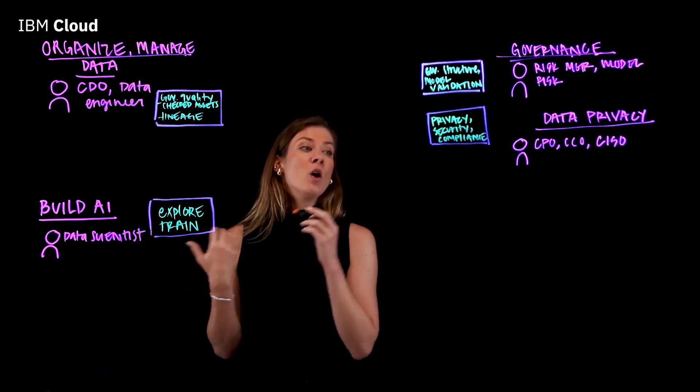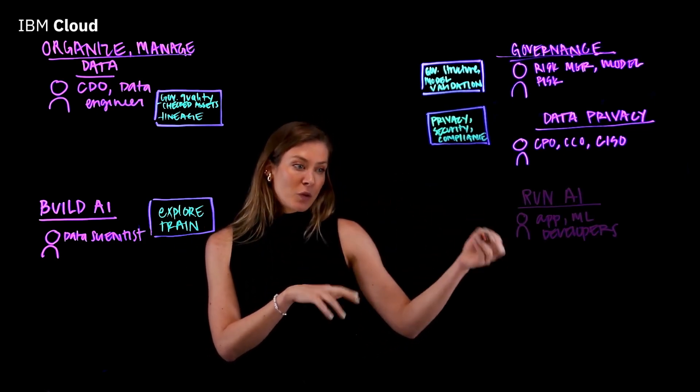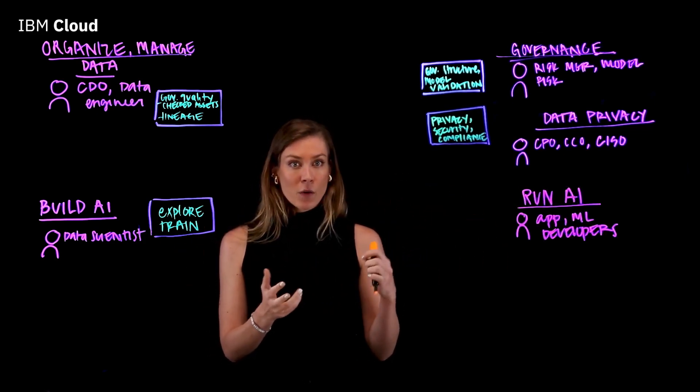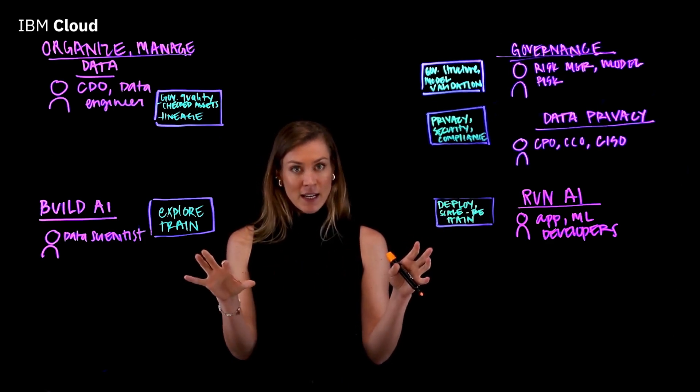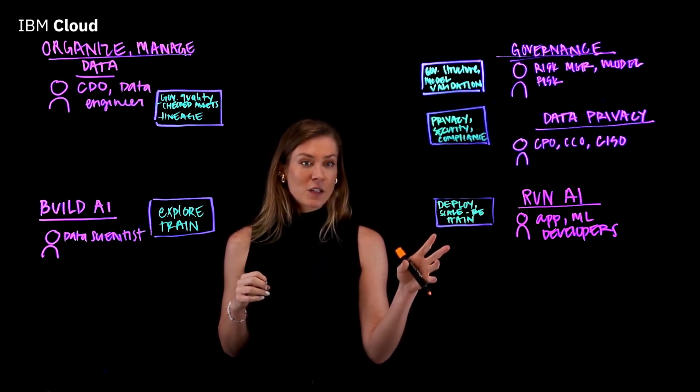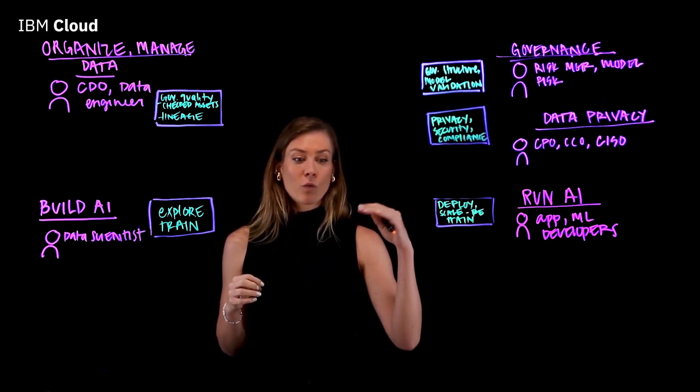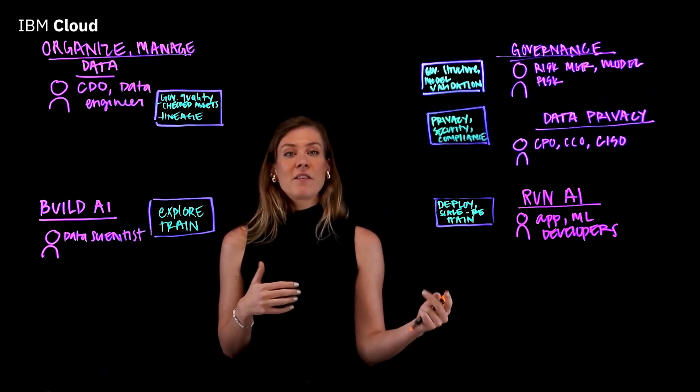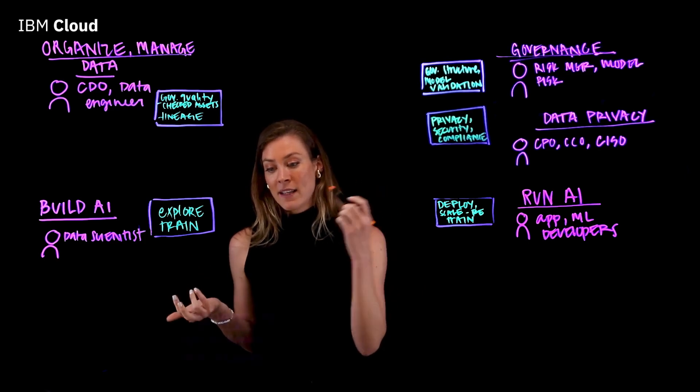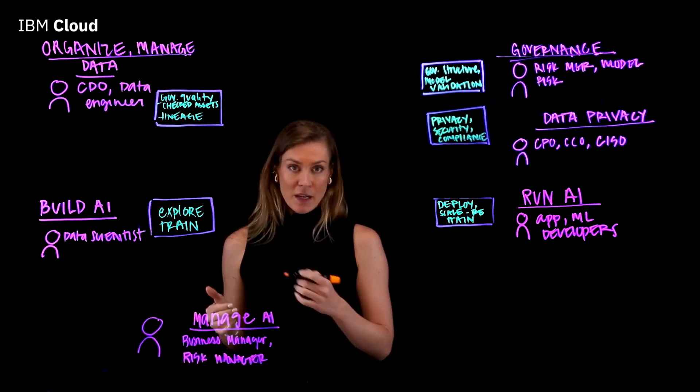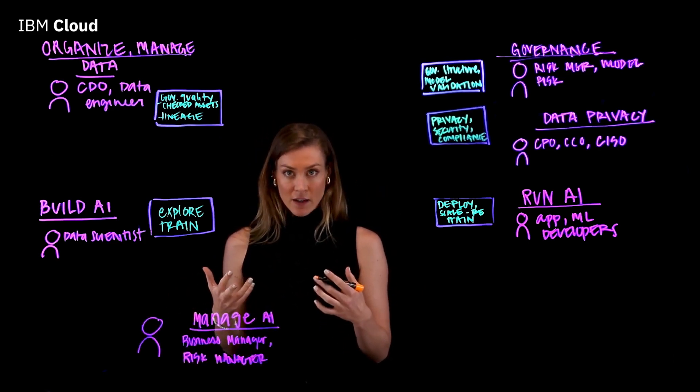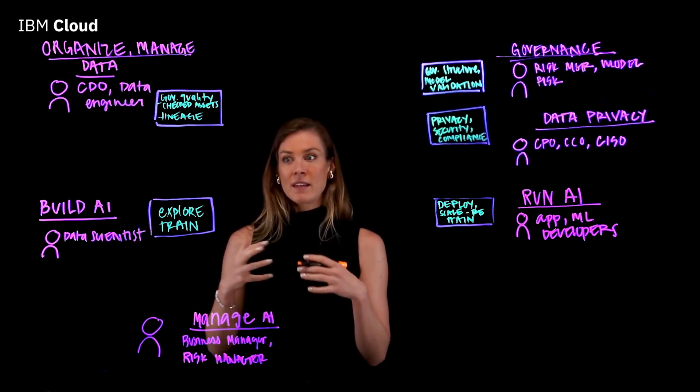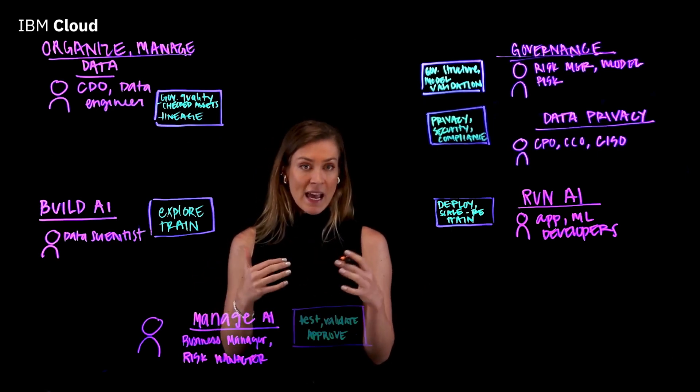On the other end of the spectrum, we've got the deploy AI team. They're the ones that are taking this from the data scientists and they're scaling it into production. They're also running the models again and making sure they're up to compliance. And then finally, we have our AI management team, who is very concerned about keeping up with the tenets of a trustworthy AI model.